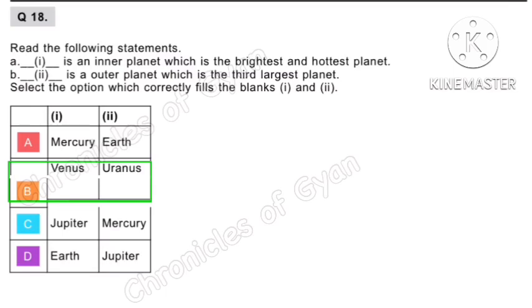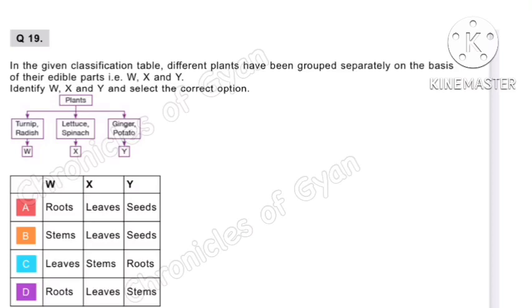Question 19. In the given classification table, different plants have been grouped separately on the basis of their edible parts W, X and Y. W contains turnip and radish — they are roots, eliminating options B and C. X contains lettuce and spinach — both are leaves. Y contains ginger and potato — both are stems. So our correct option is option D.